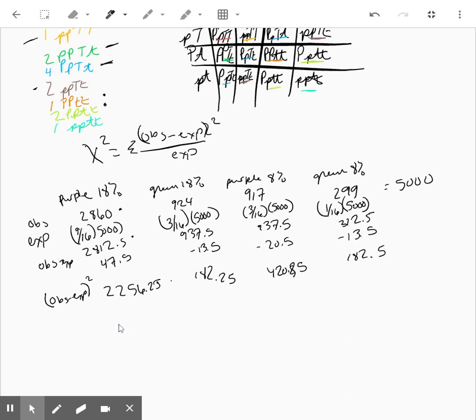So 2256.25 divided by 2812.5, 182.25 divided by 937.5, 420.85 divided by 937.5, and 182.5 divided by 312.5.